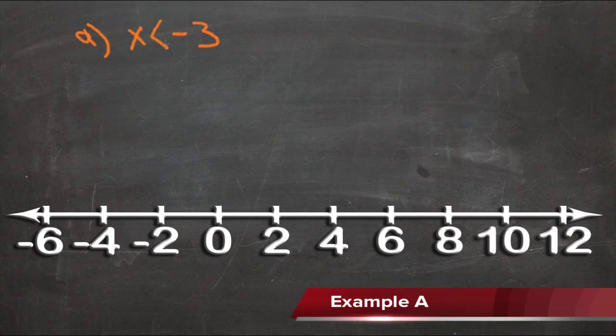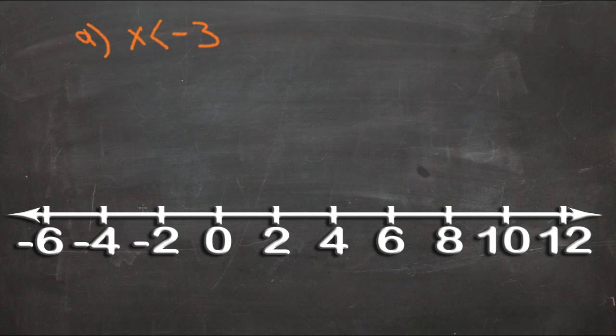What we need to do is graph what x can be. X can be any number that's littler than negative 3. So if we draw a circle here, it doesn't include negative 3 because it doesn't say x can be negative 3—it just says it has to be smaller than that. And then x can be anything smaller than negative 3.